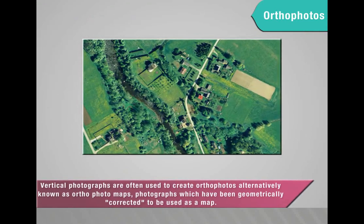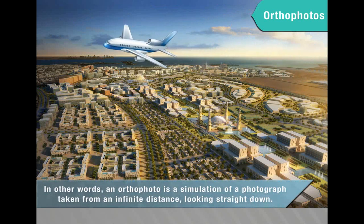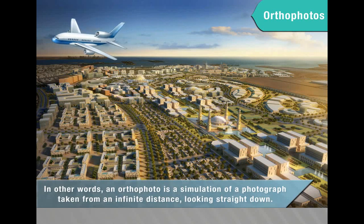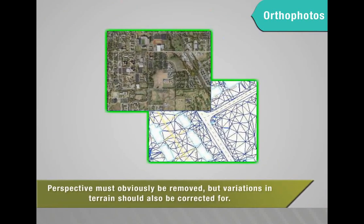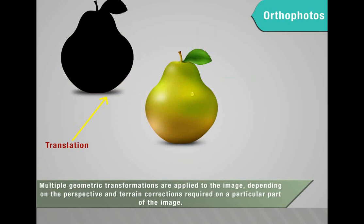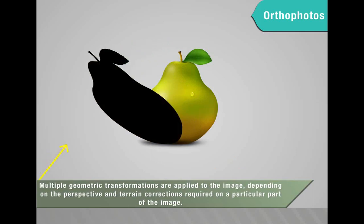Vertical photographs are often used to create orthophotos, alternatively known as orthophotomaps - photographs which have been geometrically corrected to be used as a map. In other words, an orthophoto is a simulation of a photograph taken from an infinite distance looking straight down. Perspective must be removed, and variations in terrain should also be corrected for. Multiple geometric transformations are applied to the image depending on the perspective and terrain corrections required.